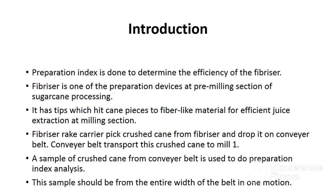The fibrizer is one of the preparation devices at the pre-milling section of sugarcane processing. It has tips which beat cane pieces into fiber-like material for efficient juice extraction at the milling section. The fibrizer carrier peels crushed cane from the fibrizer and drops it onto a conveyor belt, which transports the crushed cane to mill one at the milling section. A sample of crushed cane from the conveyor belt is used to do preparation index analysis.